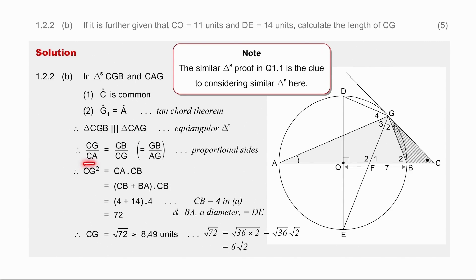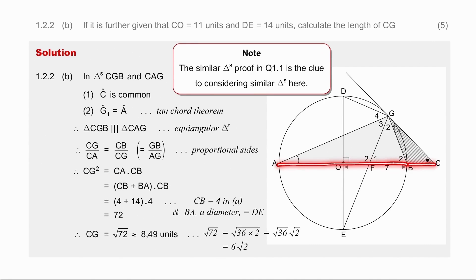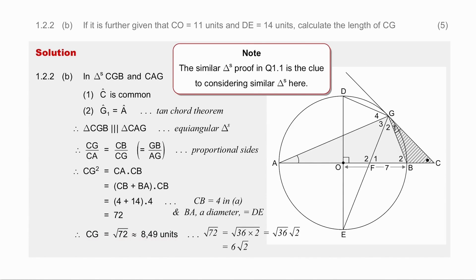Once you've proved similar triangles, get your ratios: CG over CA equals CB over CG equals GB over AG. Use the two ratios that enable you to find CG, giving CG squared equals CA times CB. CA consists of a diameter plus BC: the diameter is 14 and BC is 4, and BC is again 4. So CG squared is 72, which means CG is 8.49 units.